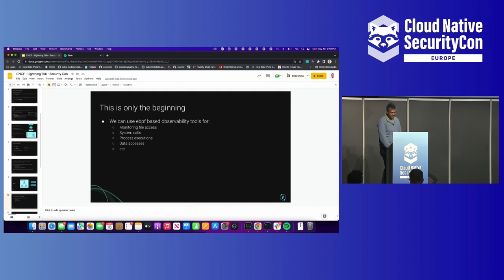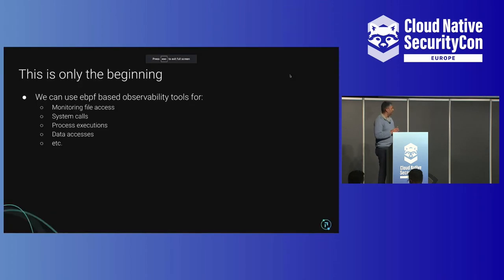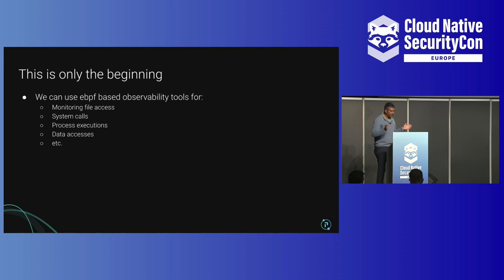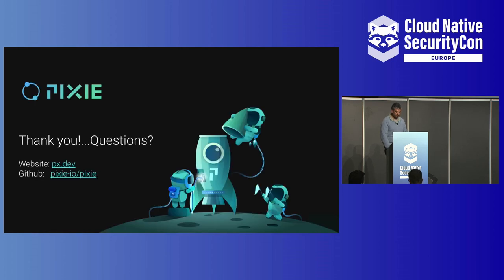With eBPF, this is really only the beginning. There are lots of other capabilities built in — things like monitoring file accesses, system calls, process execution, and looking at what files are being accessed and which information is leaking. All of that can be built in at the eBPF layer. Please check out our website and GitHub for more information. Thanks.